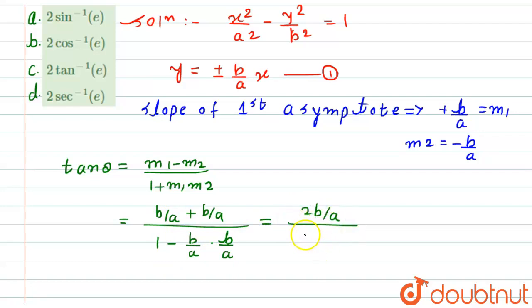So it would be equals to 2b by a divided by a squared minus b squared divided by a squared. So one a will get cancelled out. We simply get tan of theta equals 2 times b, this a will go in numerator, so it will become 2ba divided by a squared minus b squared.